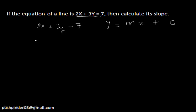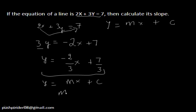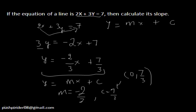Starting with 2x + 3y = 7, I bring 2x to the other side: 3y = -2x + 7. Dividing both sides by 3: y = (-2/3)x + 7/3. This is now the general form y = mx + c. From this, we can easily say that the slope m = -2/3 and the y-intercept c = 7/3. So this line passes through the point (0, 7/3), and from just one equation you can calculate both the slope and a point on the line.